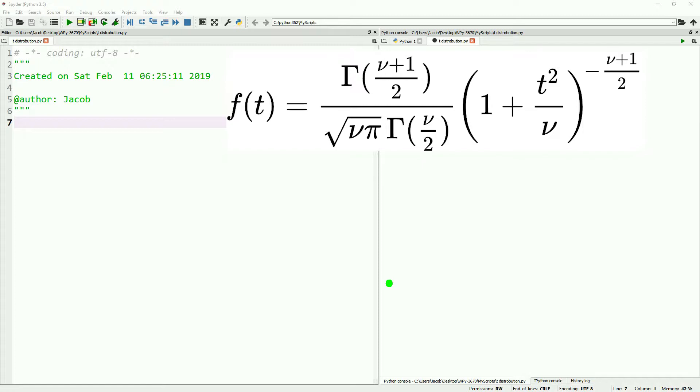The funny r-looking symbol, used in the numerator and denominator, represents the gamma function. Gamma is similar to factorial, where the only difference is you're subtracting one from each factorial element.